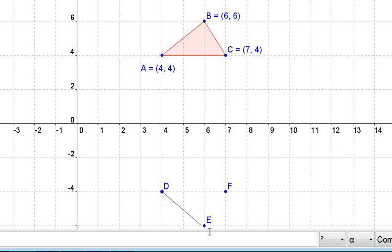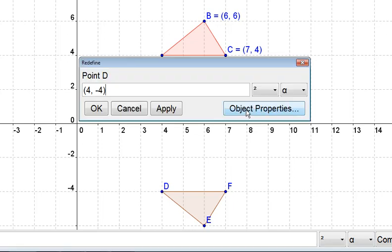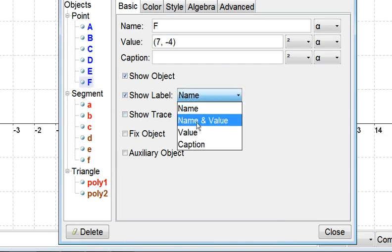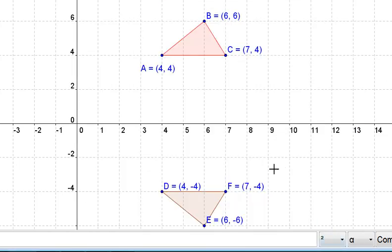And there's our new triangle, which should be named A prime, B prime, C prime. The important part, though, is where those vertices are. And we see that, in general, when we reflect across the x-axis, the x-coordinate of each of our points stays the same.